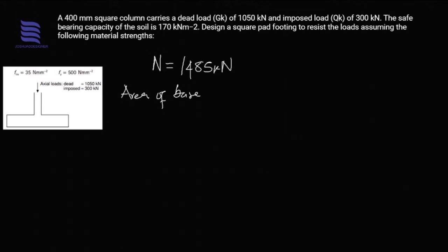The area of base is obtained in a very simple way, which is the ratio of the load to the safe bearing capacity. We have 1485 divided by the safe bearing capacity of 170, which gives us a value of 8.7 meter squared.